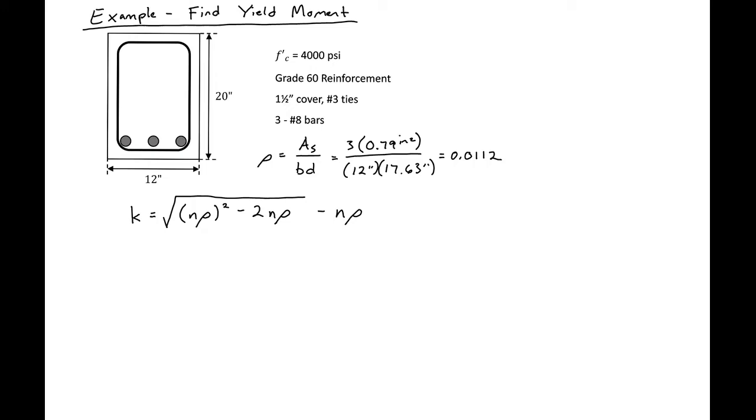In this video we're going to find the yield moment using our approximate k value that we have derived previously. So the first thing that we need is our row and our n, which is our modular ratio.